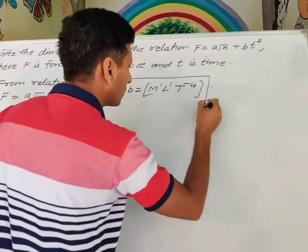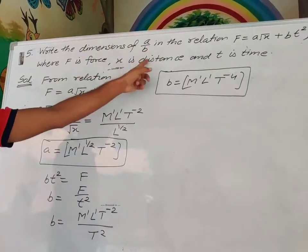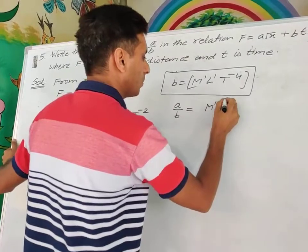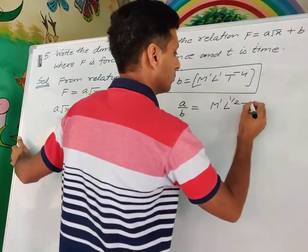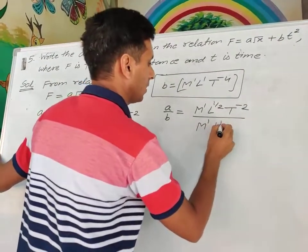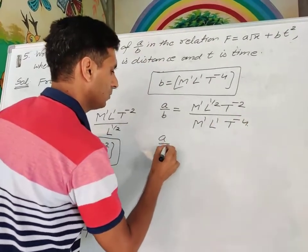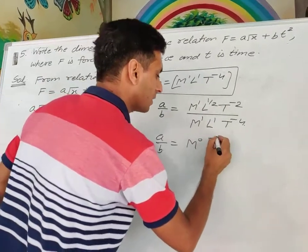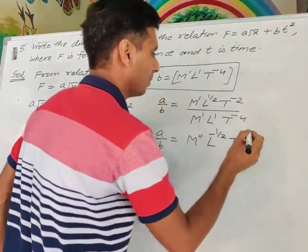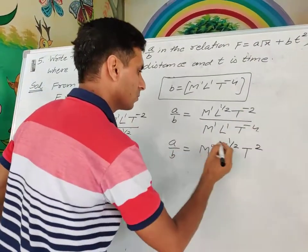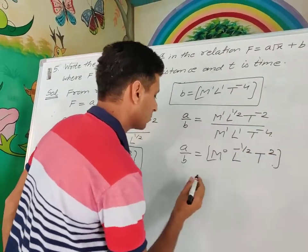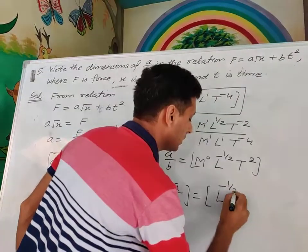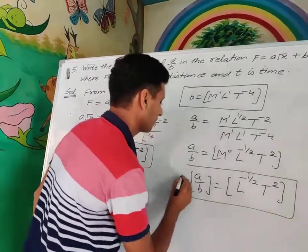Therefore dimensions of a/b = (M¹L^(1/2)T⁻²) / (M¹L¹T⁻⁴) = M⁰L^(−1/2)T². So the dimensions of a/b are L^(−1/2)T².